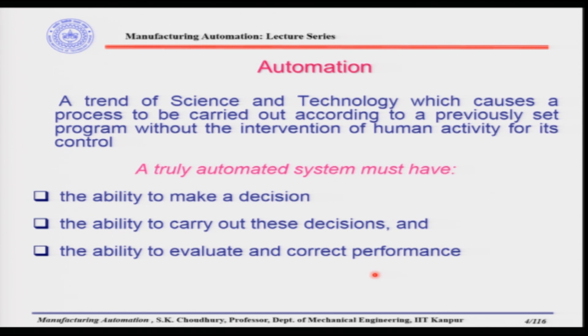A truly automated system must have three criteria: first, the ability to make a decision; second, the ability to carry out those decisions; and third, the ability to evaluate and correct the performance. These are the same three things that we as human beings do every day.